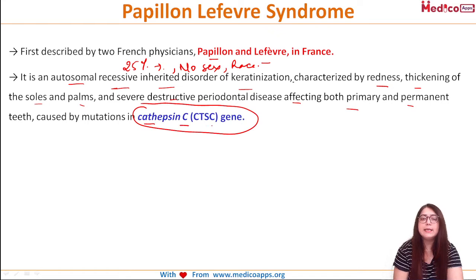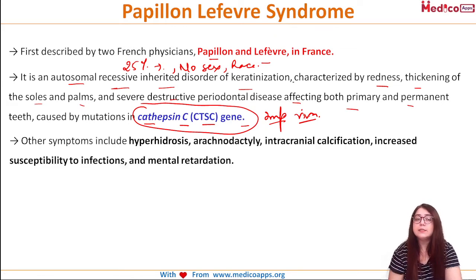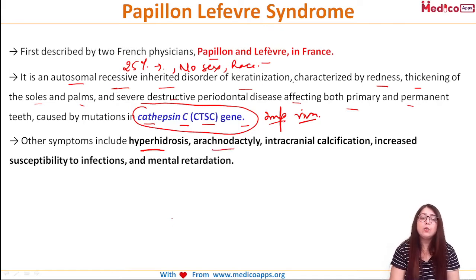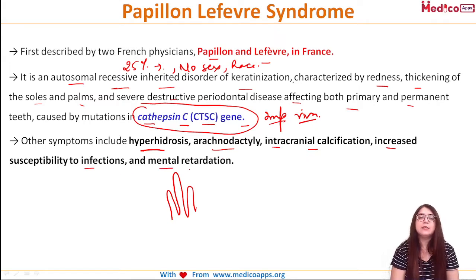Very importantly, it is caused by a mutation in cathepsin C, that is the CTSC gene. This can be asked in your viva, especially in MDS viva, where the examiner may ask you the etiology or the gene affected in Papillon-Lefèvre syndrome. Other symptoms include hyperhidrosis — excessive sweating — arachnodactyly — long and cylindrical fingers like a spiderweb — intracranial calcification evident on radiographs, increased susceptibility to infections such as Candida, and mental retardation.